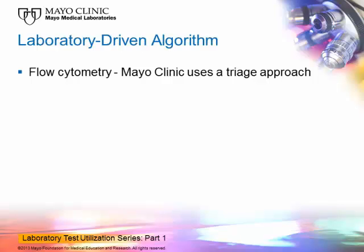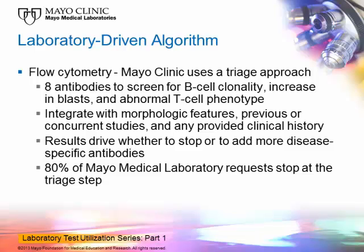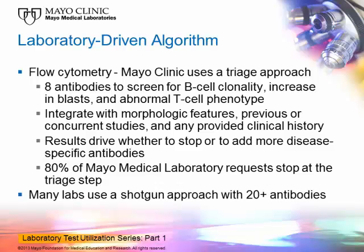Let's look at an example of a laboratory-driven process. At Mayo Clinic, we use a triage approach in the flow cytometric evaluation of hematologic disease, where we use a minimal number of antibodies to screen for B-cell clonality, an increase in blasts, and/or an abnormal T-cell phenotype. The results from this triage, together with the clinical history provided and morphologic appearance of the slide, are used to determine whether to stop the analysis or to add on more disease-specific antibodies. As a result of this approach, approximately 80% of our Mayo Medical Laboratory's requests actually stop at this triage step. If we compare this to what many laboratories use — a shotgun approach with 20 to over 30 antibodies in any given case — you can clearly see the advantage of using a stepwise or triage-type process.